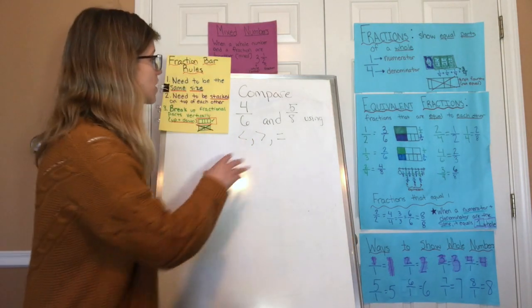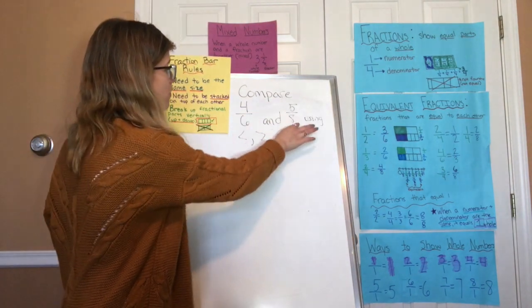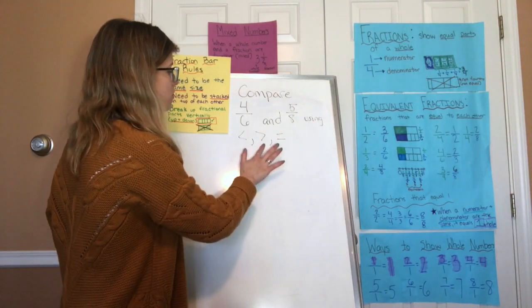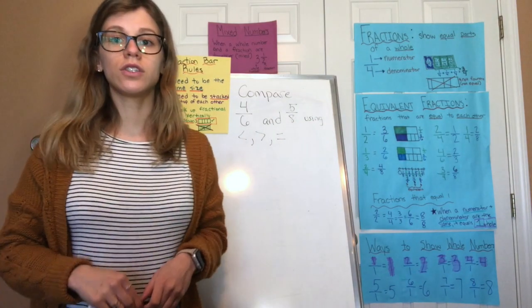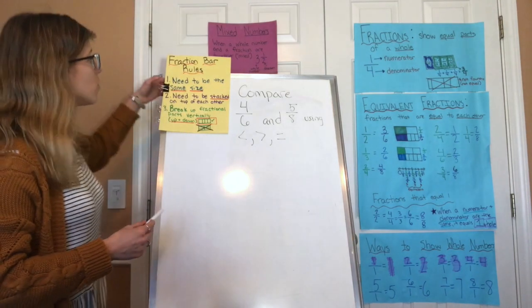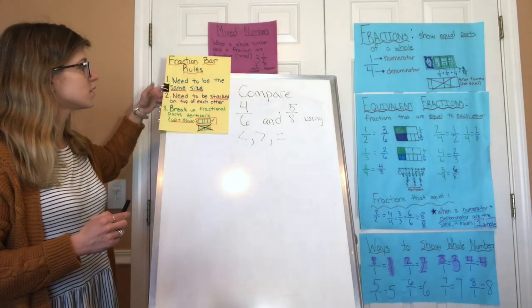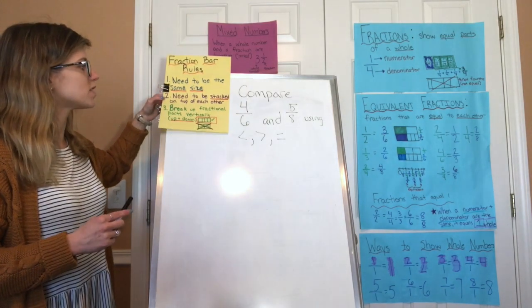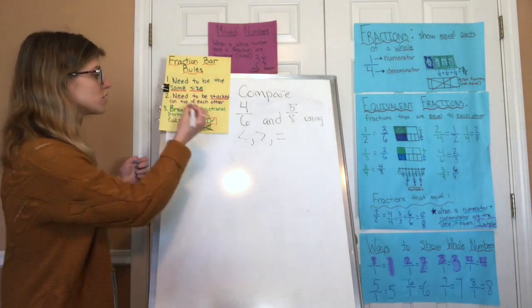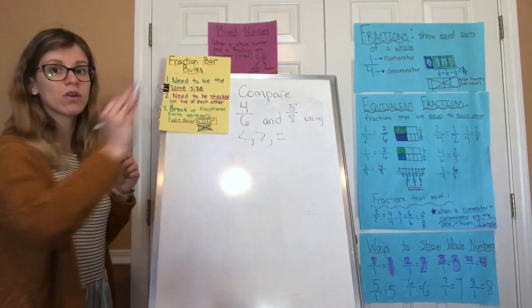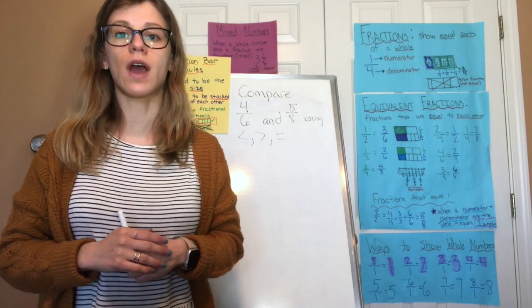The first question is: compare 4/6 and 5/8 using less than, greater than, or equal to. What you need to do is follow our fraction bar rules — the bars need to be the same size, stacked on top of each other, and broken up into fractional parts vertically — to compare these two fractions.